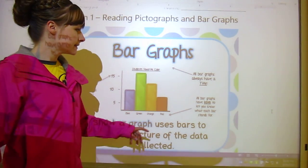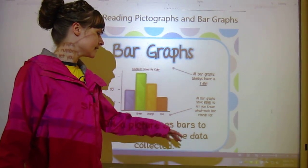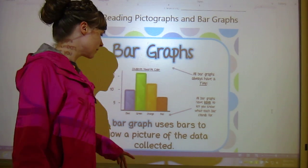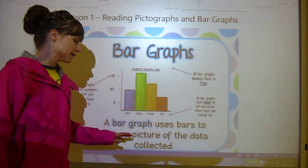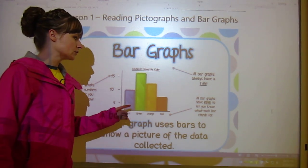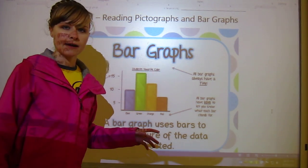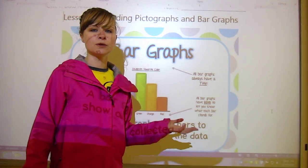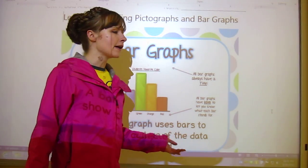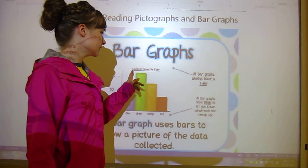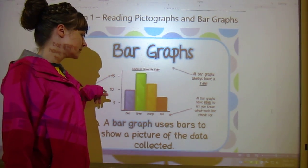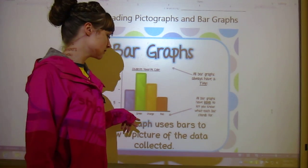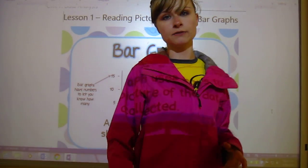What we use bar graphs for is to show a picture of the data collected. It's for using just like a visual to show what the data that's been collected in the form of bars. Our title is students favorite color, so I guess that this should say number of students and it should say color or favorite color, but this one doesn't.